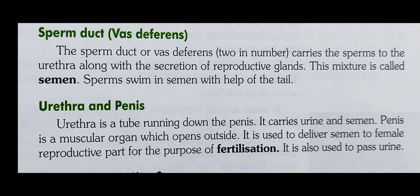Next is the sperm duct or vas deferens. The sperm duct or vas deferens carries the sperms to the urethra along with the secretion of reproductive glands. This mixture is called semen. Sperms swim in semen with the help of the tail.